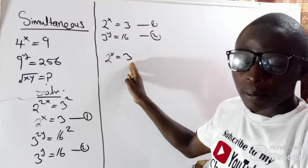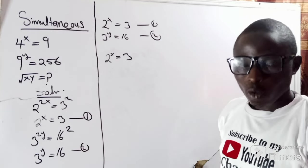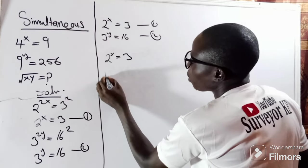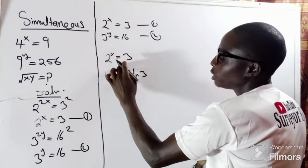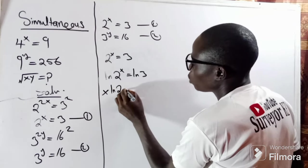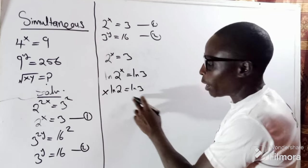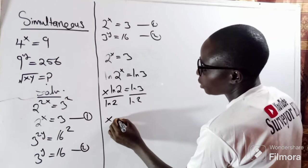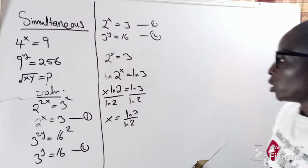There is no way to make the two bases the same, so the only thing is to apply the natural log to both sides. That means I have ln(2^x) equals ln(3). The x comes down, so x times ln(2) equals ln(3). Dividing both sides by ln(2), x equals ln(3) divided by ln(2).